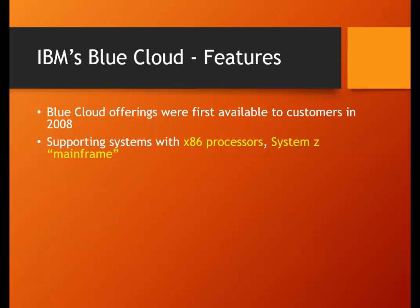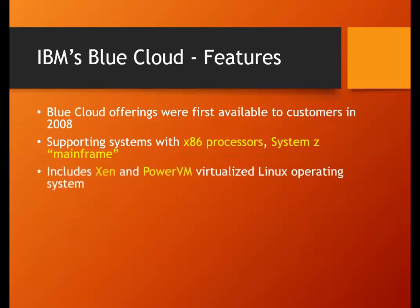During that time, mainframes were popularly used in big organizations to store huge data or for tremendous processing power, and even mainframes were supported by Blue Cloud. In order to provide virtualization, IBM developed their own virtualized software or virtual machine called Power VM — Power Virtual Machine — which is based upon the Linux operating system.